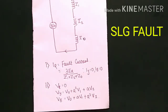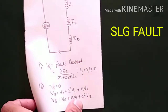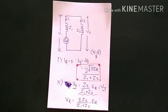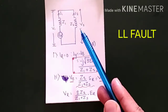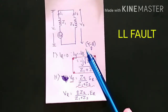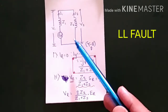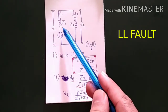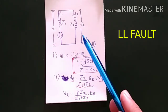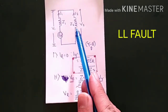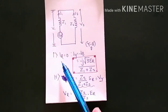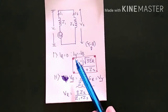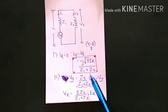The second one is line to line fault. The diagram shows Z1 and Z2 — Z0 is not present here. ER is in series with Z1 and Z2, representing positive and negative sequence. The fault is occurring on Y and B phases. The formula is: IR = 0, and IY = −j√3 · ER / (Z1 + Z2).